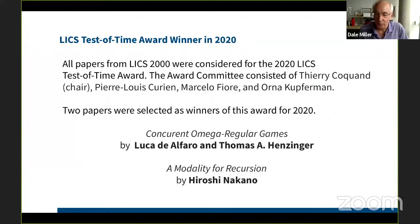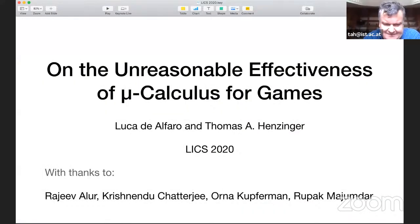Next is the test of time award. This is given to papers that were published 20 years ago in LICS. And this year they picked two. These two papers are titled Concurrent Omega Regular Games by Luca D'Alfero and Thomas Hensinger. And the second paper, Modality for Recursion by Hiroshi Nakano. I will pass it back to Luca and Thomas.